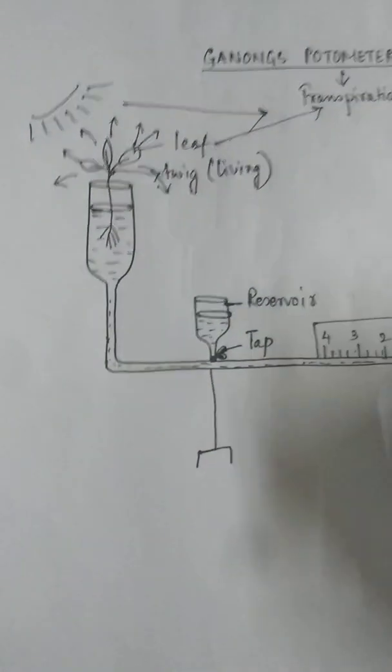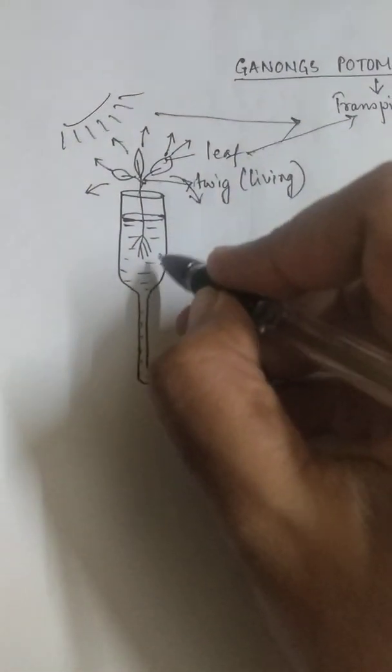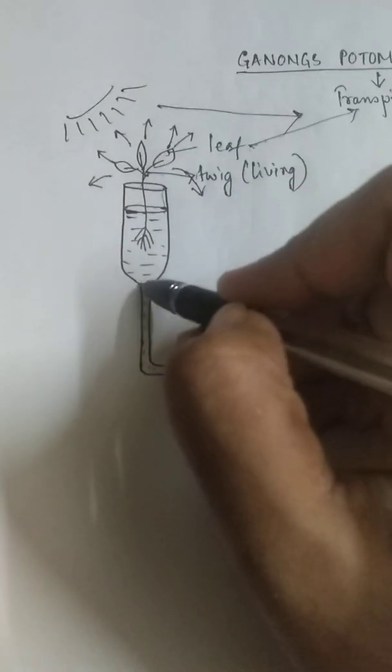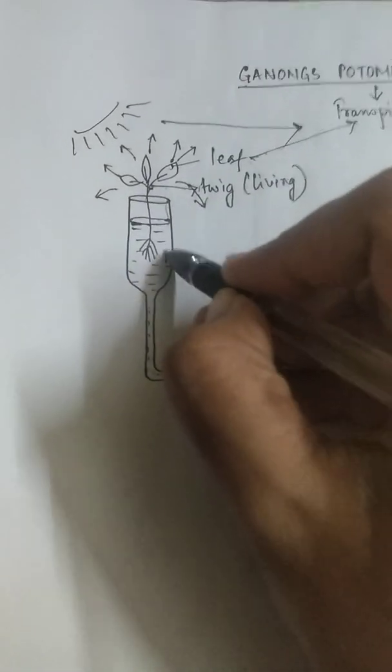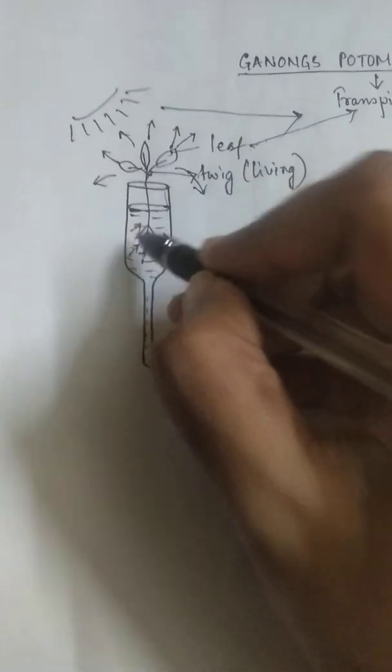So the plant is losing water from its body. So the plant will be very thirsty. So definitely the plant will be absorbing water by the roots. From where will it get the water? From the reservoir.